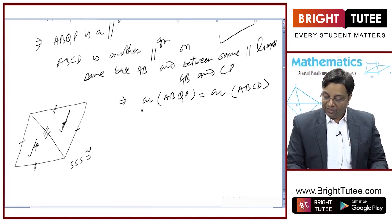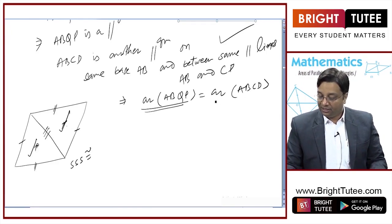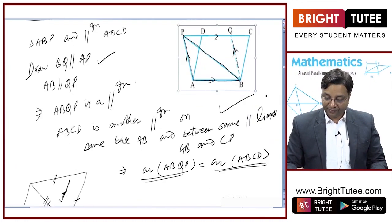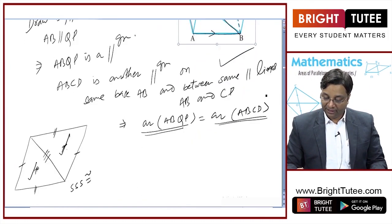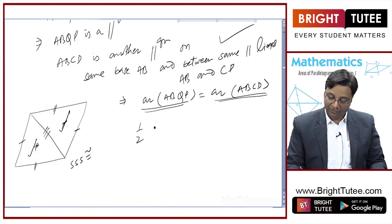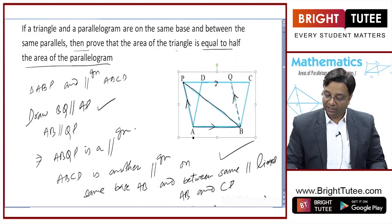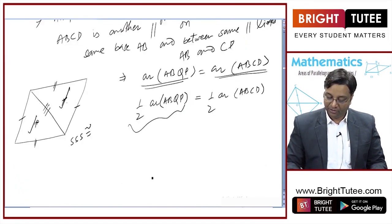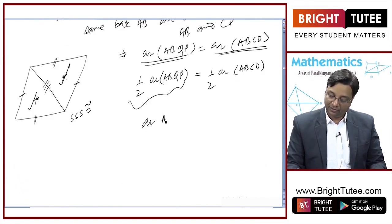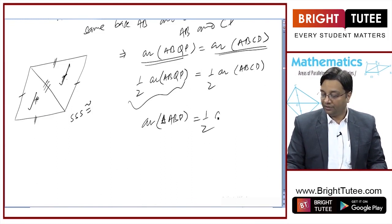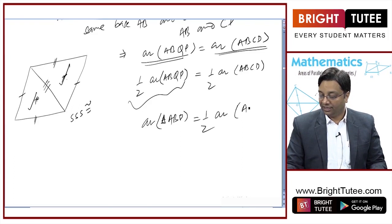So if area of ABQP equals area of ABCD, then half of area of ABQP equals half of area of ABCD. Half the area of ABQP is nothing but triangle ABP. Therefore, area of triangle ABP is equal to half the area of parallelogram ABCD.